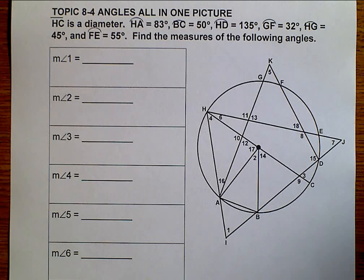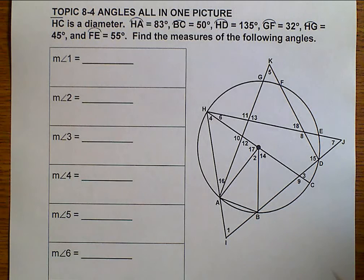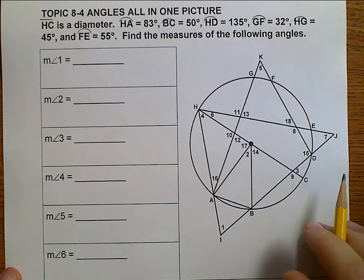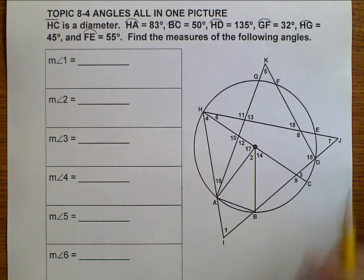Hello, this is Geometry Topic 8-4. We're talking about angles on one picture. We're given a rather complicated picture right here, and we are told to find all 18 angles that are numbered.